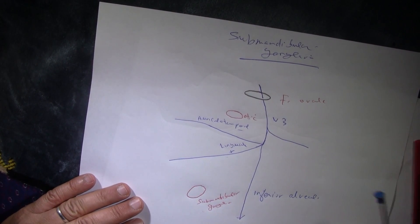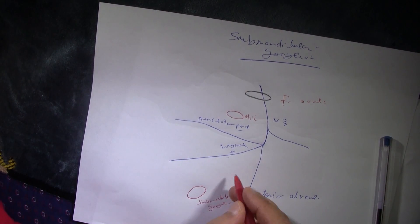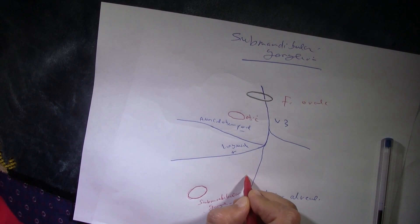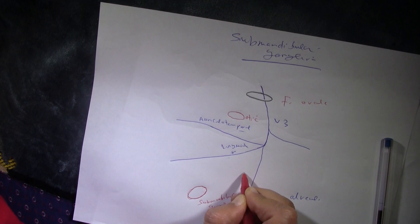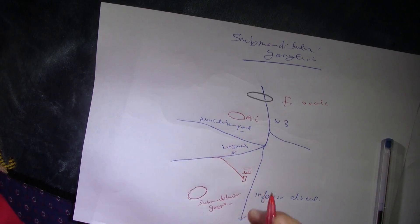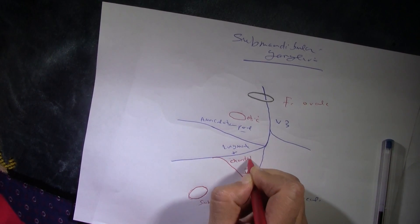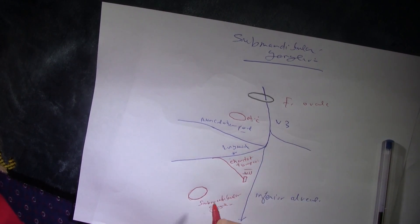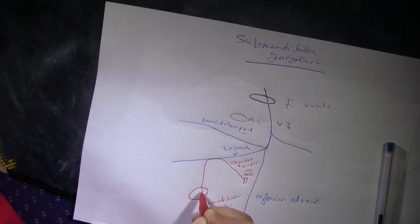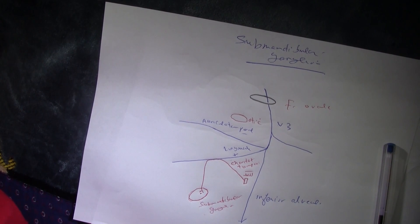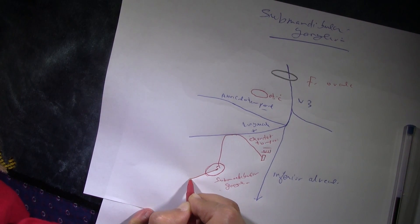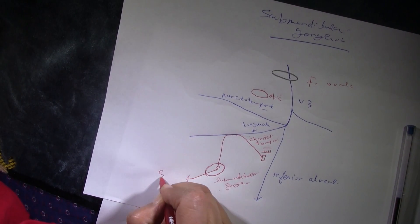The parasympathetic root of the submandibular ganglion comes originally from the facial nerve — cranial nerve seven. The facial nerve sends a branch called the chorda tympani nerve. The chorda tympani joins the lingual nerve, and its preganglionic fibers travel to stop at the submandibular ganglion. From there, the postganglionic fibers supply the submandibular gland.